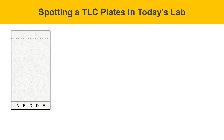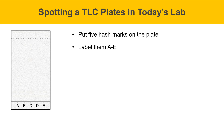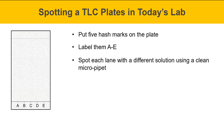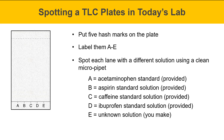In today's experiment, we're going to analyze five solutions, so put five hash marks on the plate and label them A through E. Spot each lane with a different solution using a clean micropipette. The suggested labeling scheme is: A for acetaminophen standard, B for aspirin standard, C for caffeine, D for ibuprofen, and E for your unknown solution, which you'll need to make up.